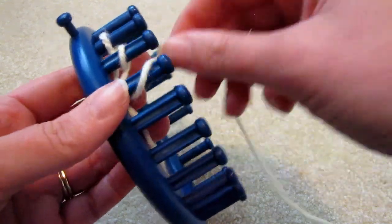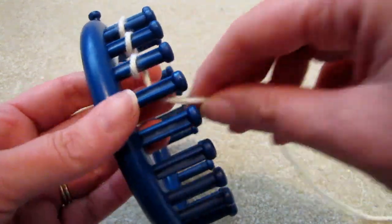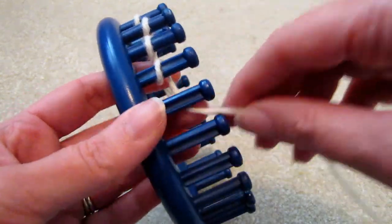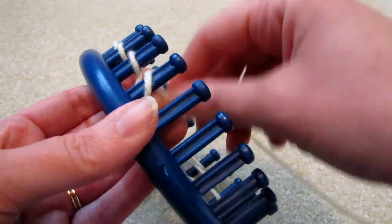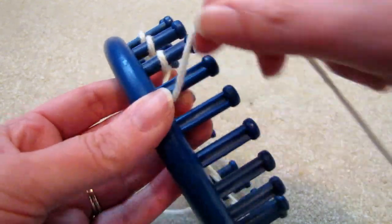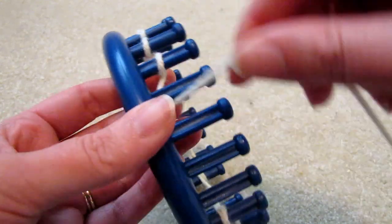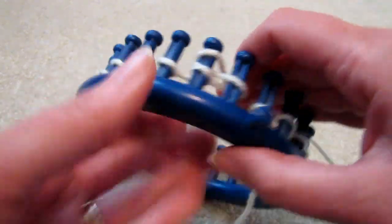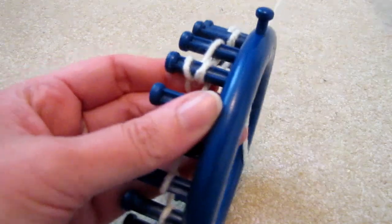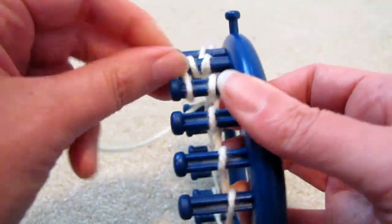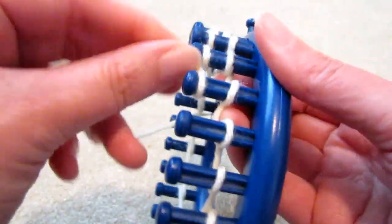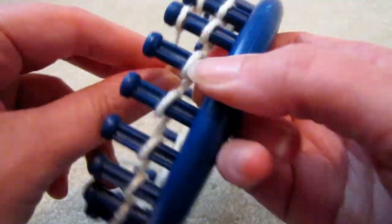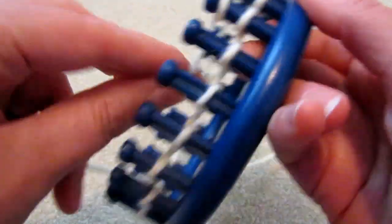So we'll cast on 24. We'll wrap 24 pegs, which is every one of them. But don't go in the round. Once you've reached the last peg, start wrapping around backwards as with the flat panel. And then knit an e-wrap of four rows.